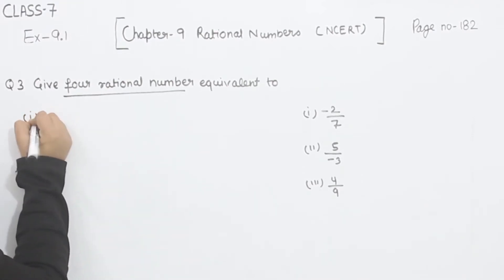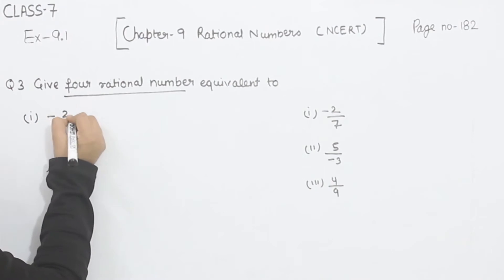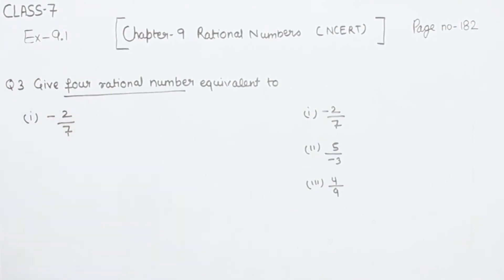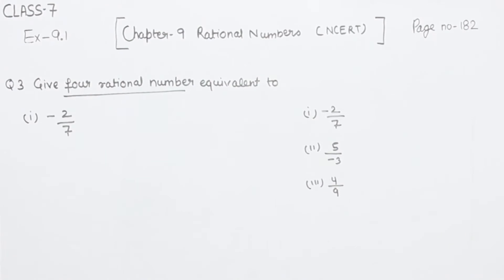We start with the first one — we are having minus 2 by 7. Like we have done in the last question, question number 2, we will multiply by 2, 3, 4, and 5 to find the equivalent fractions.